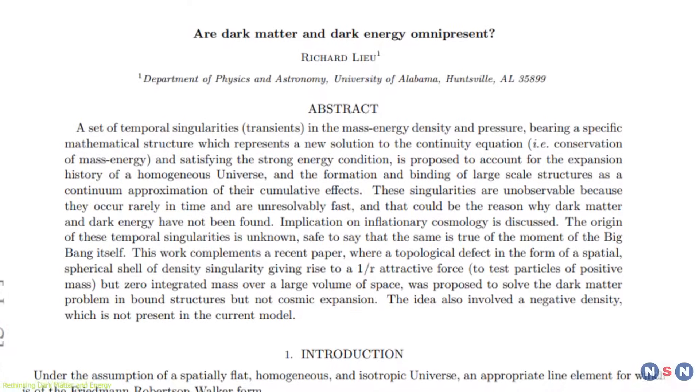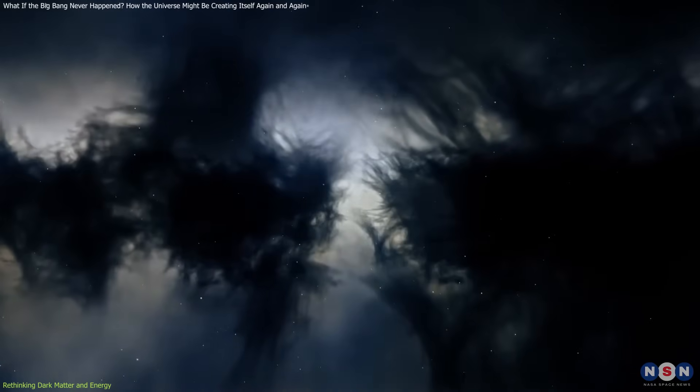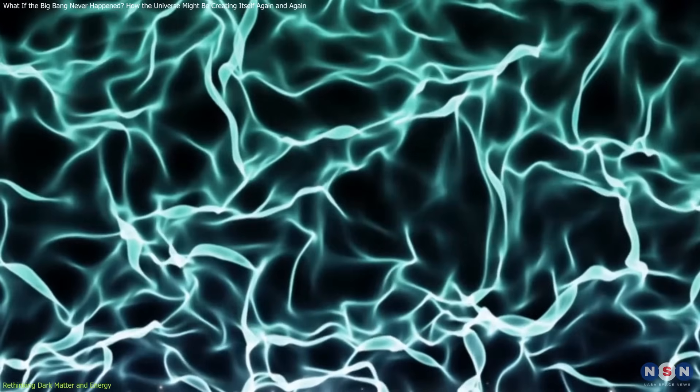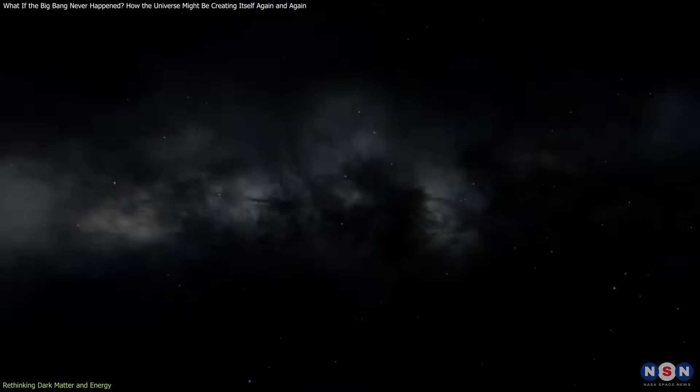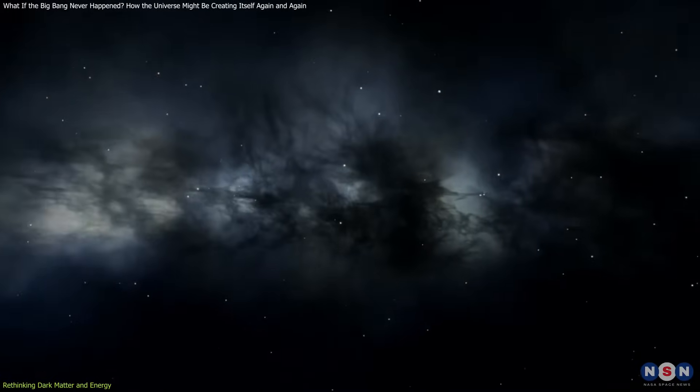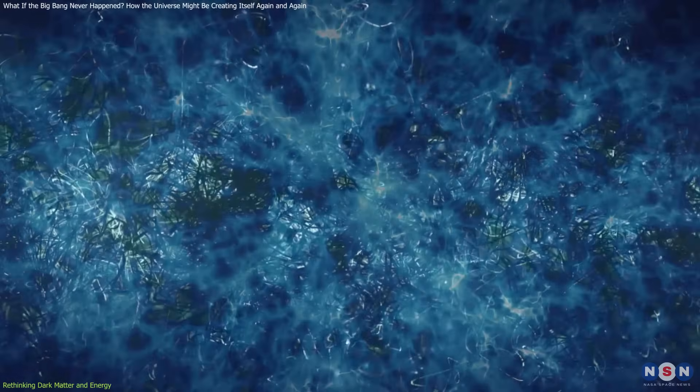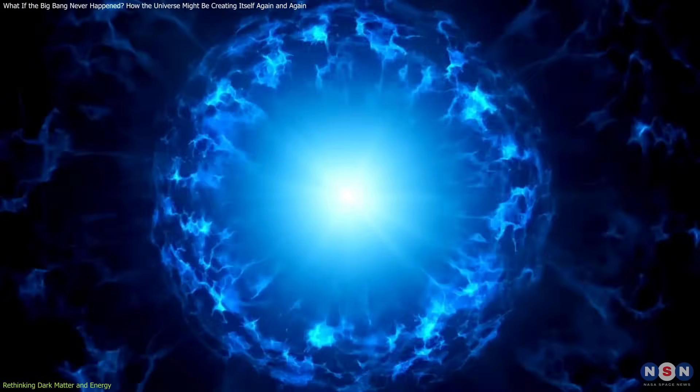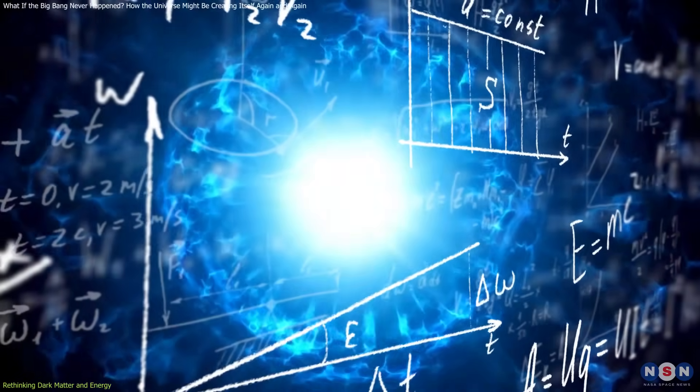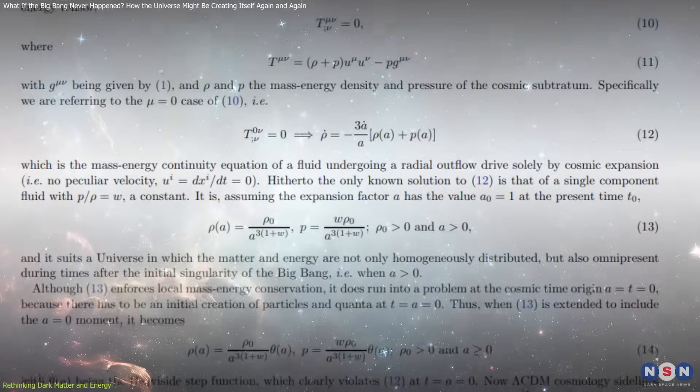One of the most startling claims in Liu's proposal is that it may eliminate the need for two elusive entities: dark matter and dark energy. These ideas were introduced to explain anomalies in galactic rotation and cosmic expansion. But after decades of research, no direct detection has occurred. Liu's model suggests that both phenomena may be artifacts of our misunderstanding. By focusing on the role of negative pressure, a known concept in physics, his theory reconstructs cosmic behavior using forces we already understand.